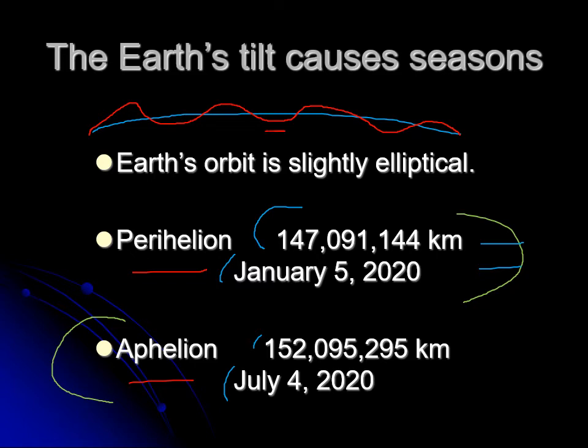Earth speeds up and slows down as it goes — when you're closer you're going faster, when you're farther you're going slower. This means the dates shift ever so slightly. They don't shift very much; we are always closest to the sun in January and always farthest in July — those factors don't change. What changes is the exact date in January and the exact date in July, usually only a few days one way or the other — around January 4th or July 4th give or take a couple days. The distances also shift a little bit because of Earth's wiggly orbit.